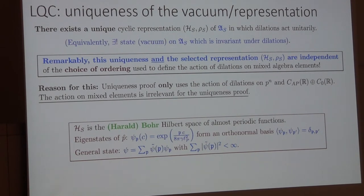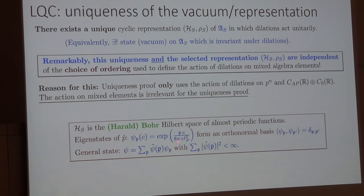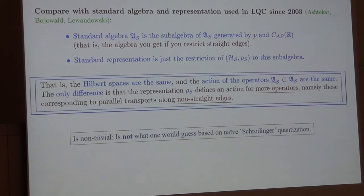What's selected is the state which Christian just derived, which when you use the GNS construction gives you the usual kinematical Hilbert space in loop quantum cosmology that's been used since 2003. This space is very simple to characterize: as an orthonormal basis you have eigenstates of momenta, and the point is that they're normalizable, so a general state is a countable linear combination of the momentum eigenstates where the coefficients are square summable. We're selecting the same representation that's been used since 2003.